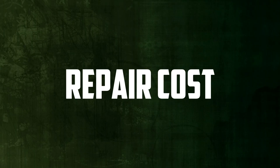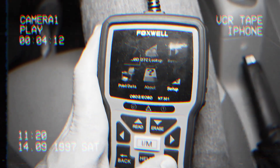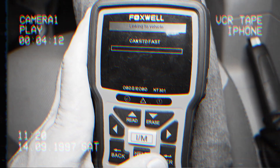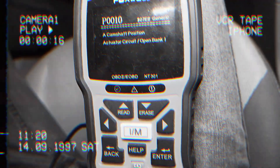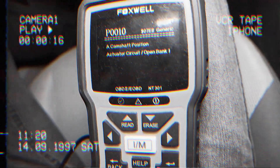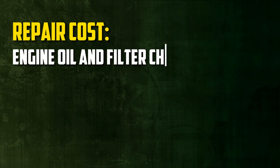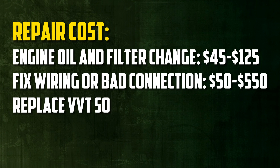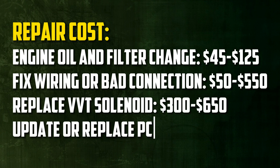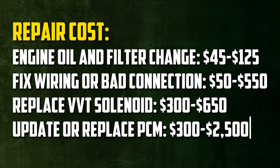Once you've identified the issue, here are estimated repair costs including parts and labor to help you budget: engine oil and filter change, $45 to $125; repair wiring or bad connection, $50 to $550; replace VVT solenoid, $300 to $650; update or replace PCM, $300 to $2,500.